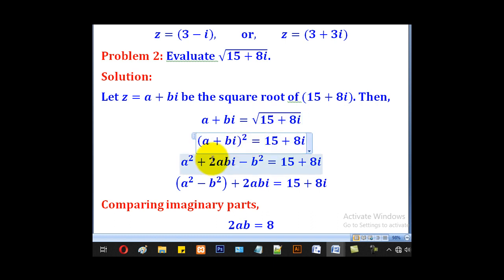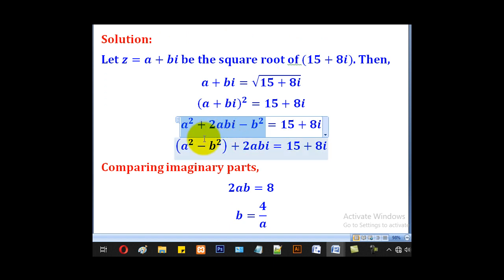When you square both sides, we shall come up with this. When you expand this, we shall come up with that. After that, we shall collect like terms. This and this are real, so we put them on one side.